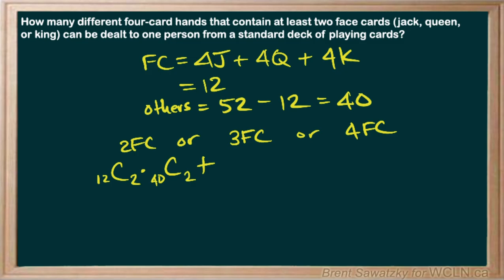If we want two face cards we need this to happen and this to happen. That's why we have the multiplication there. But when we're looking at it could be two face cards or it could be three face cards, again the or is replaced by a plus.